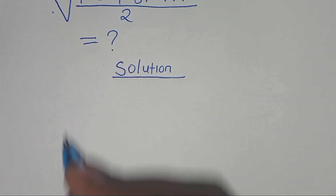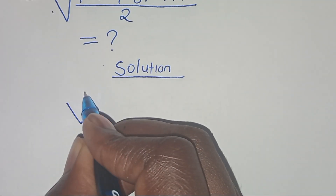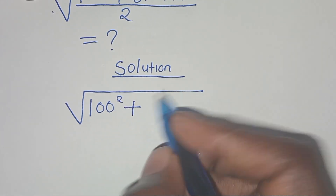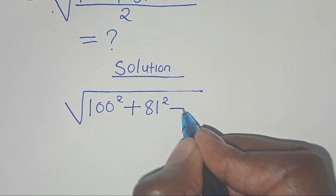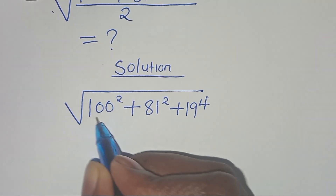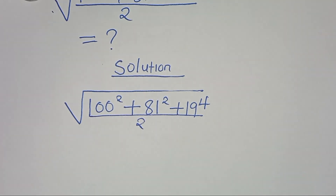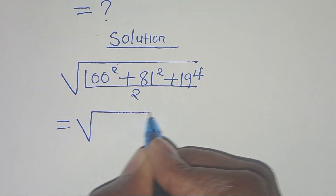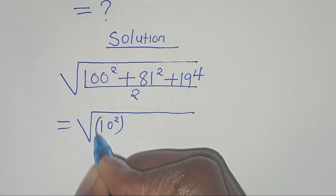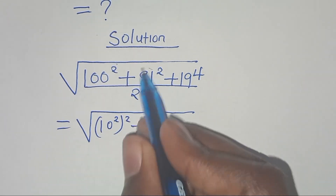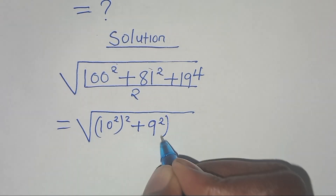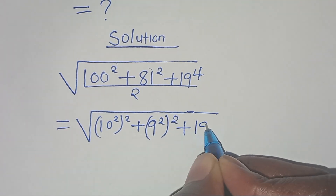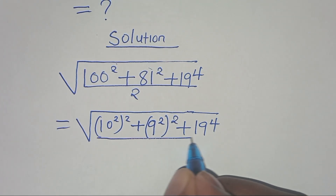From here we have the square root of 100 raised to power 2 plus 81 raised to power 2, then plus 19 raised to power 4, all over 2. We can express 100 to power 2 as 10 to power 2 raised to power 2, then plus 81 as 9 raised to power 2 raised to power 2, then plus 19 raised to power 4, all divided by 2.